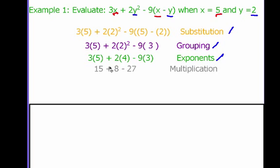2 times 4 gives us 8, and 9 times 3 gives us 27. So I get the expression 15 plus 8 minus 27.